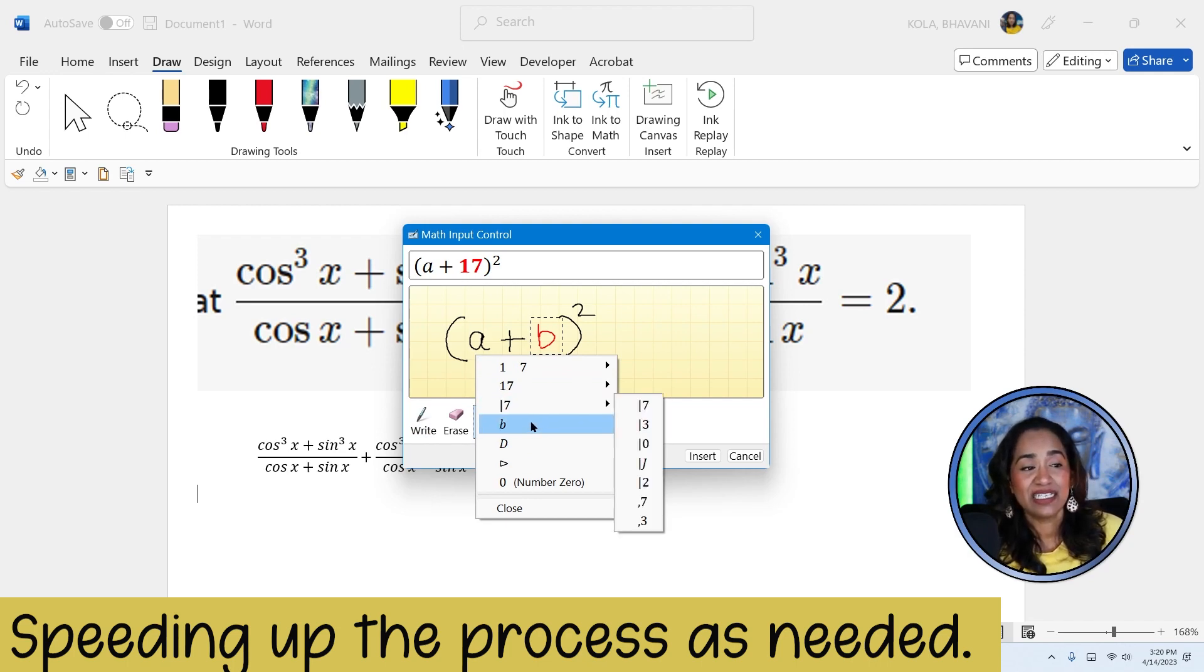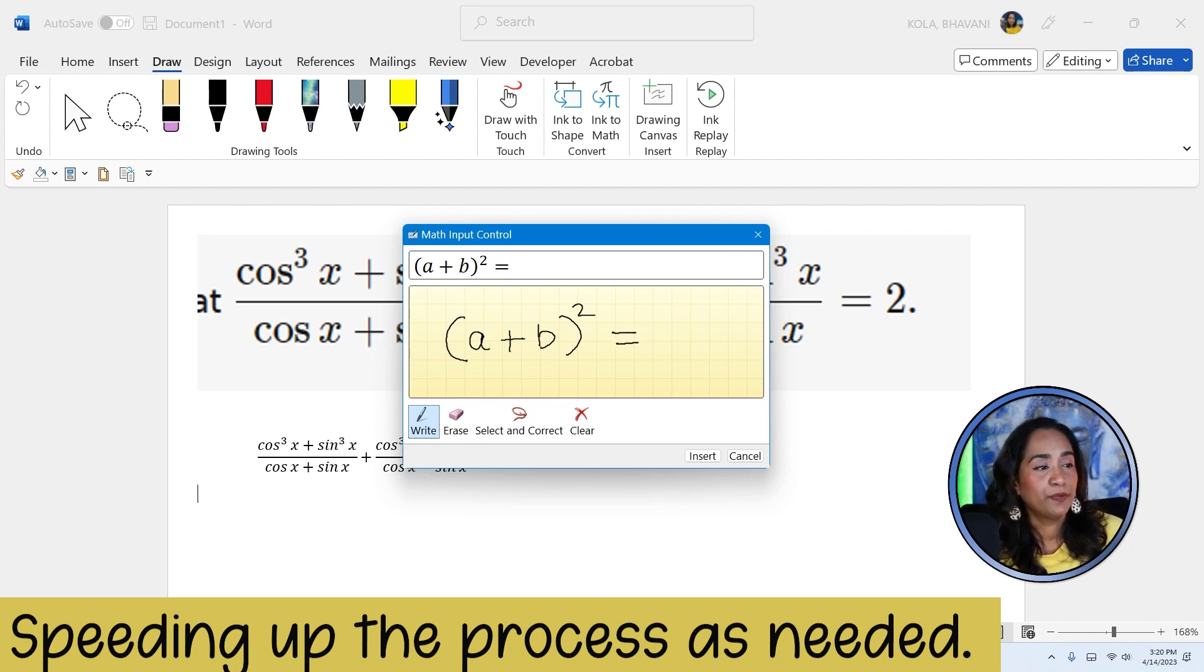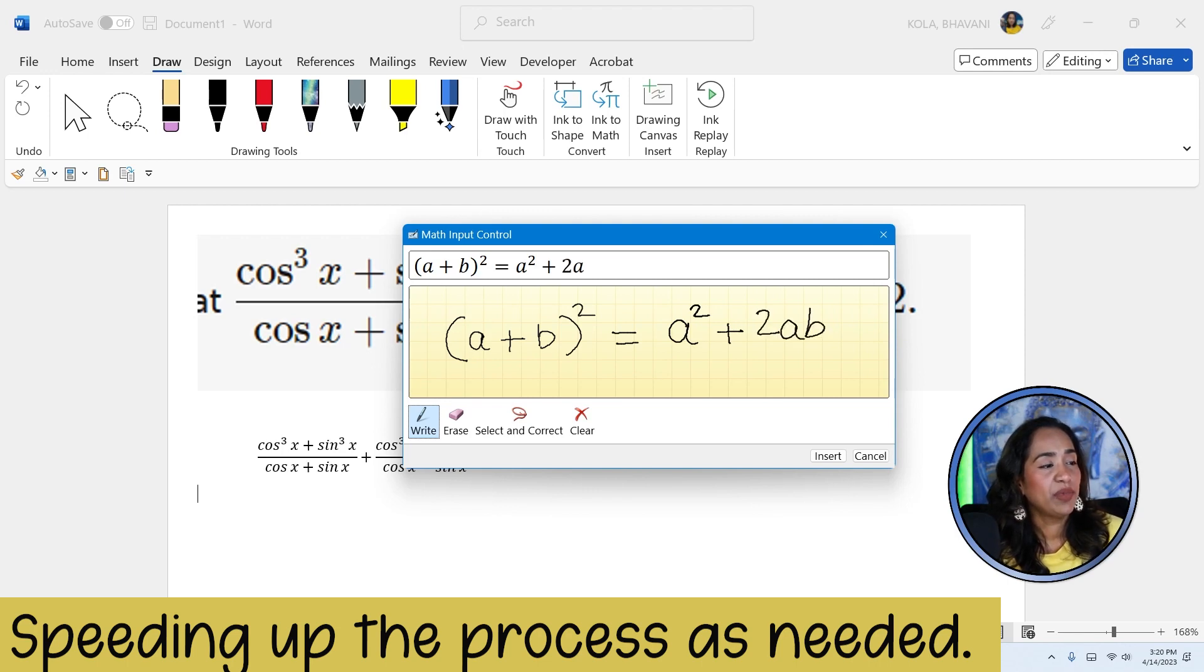And it's going to ask me, is that a 17, 7? I'm going to say no, it's a b. And it automatically changes it to a b. And I'm going to go back, click on my write tool, equal to a squared plus 2ab plus b squared. And I'm going to click insert.